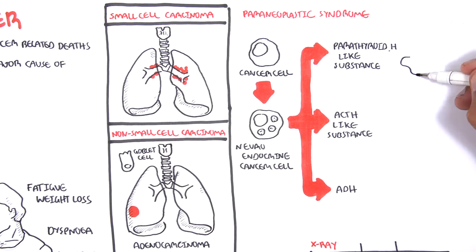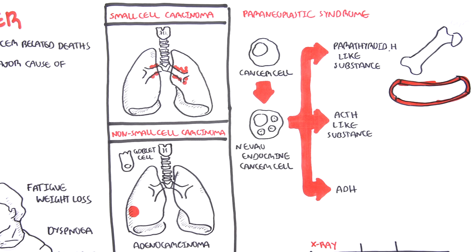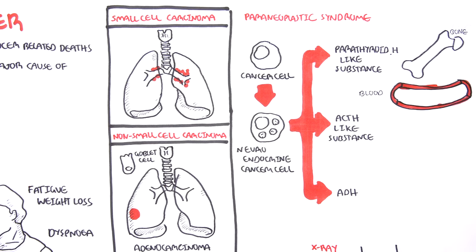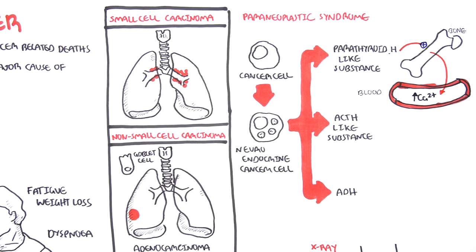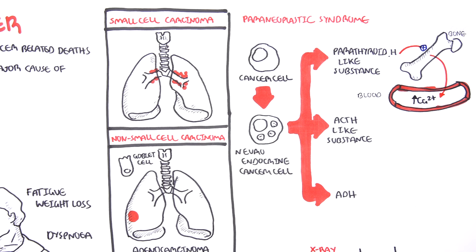So what do they do? Well, parathyroid hormone-like substance will target our bones. It will cause the bones to break down its minerals, releasing calcium into the bloodstream, thus increasing blood calcium levels, resulting in hypercalcemia.